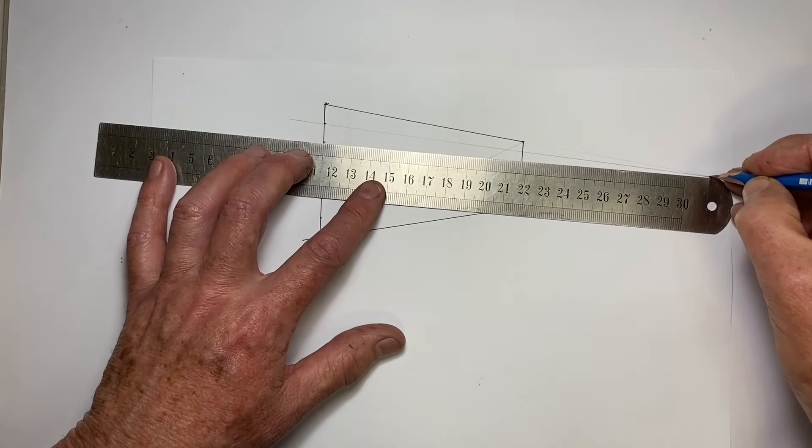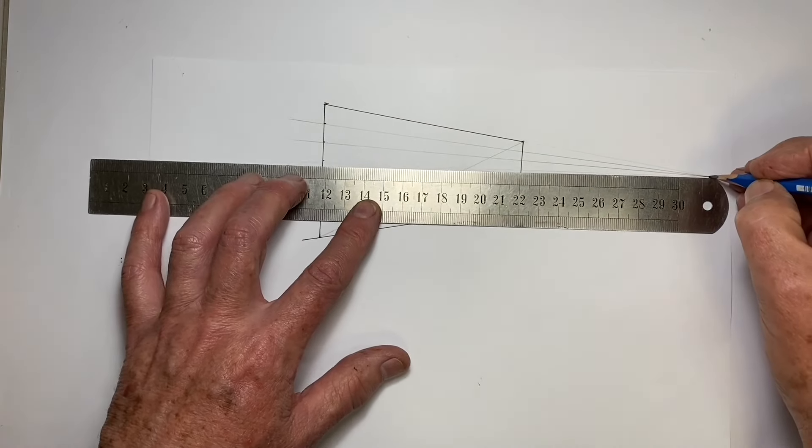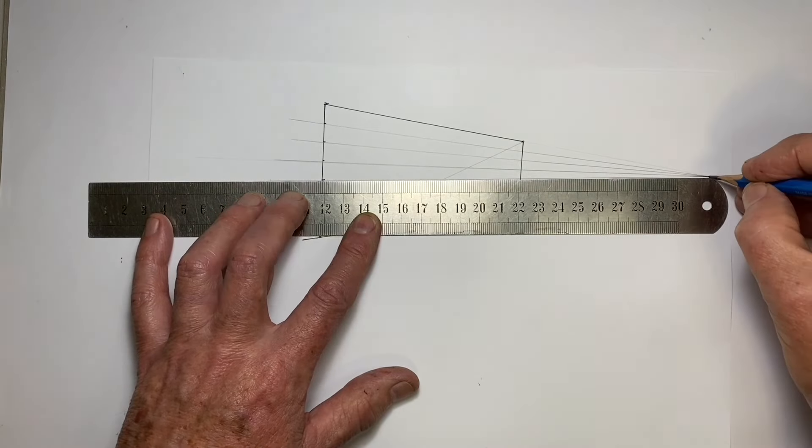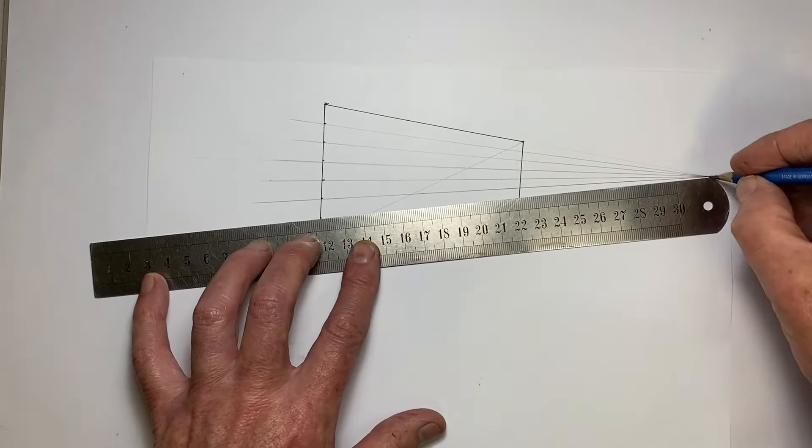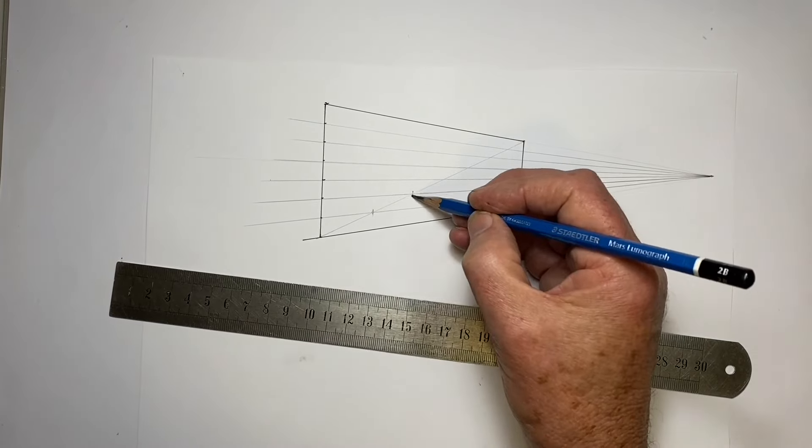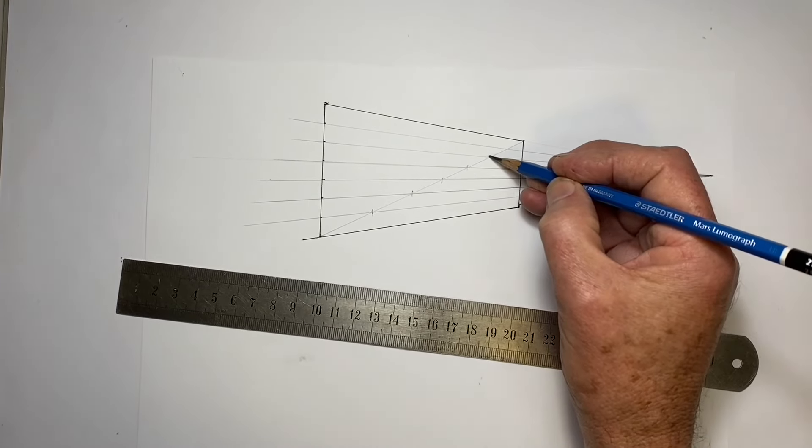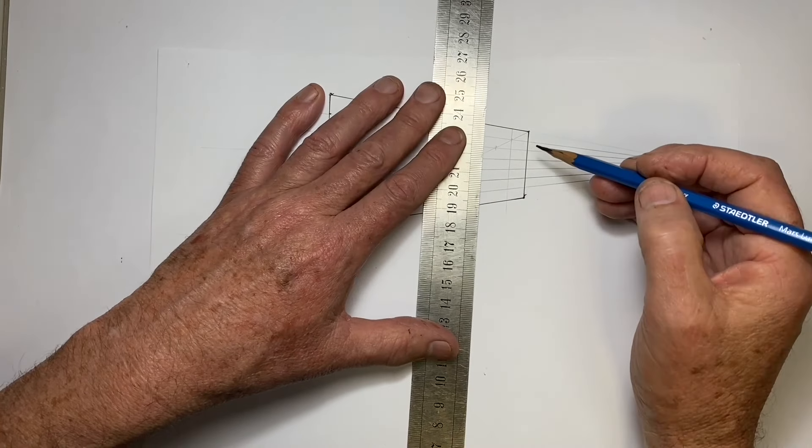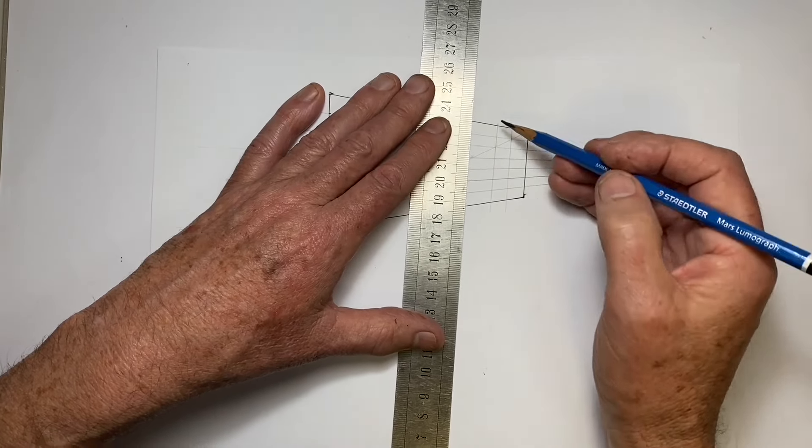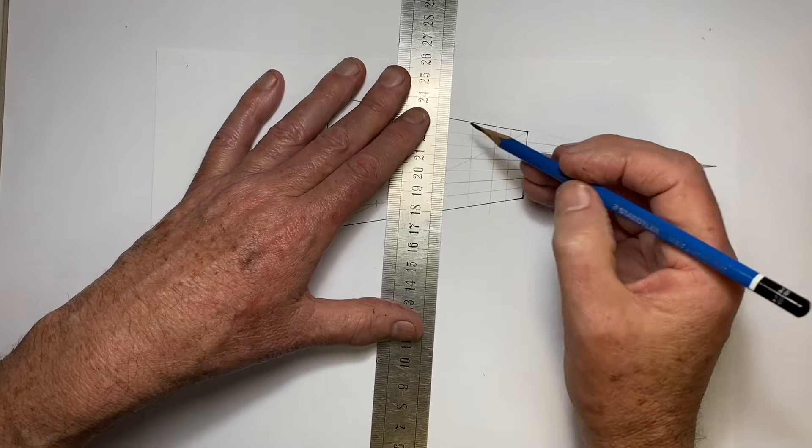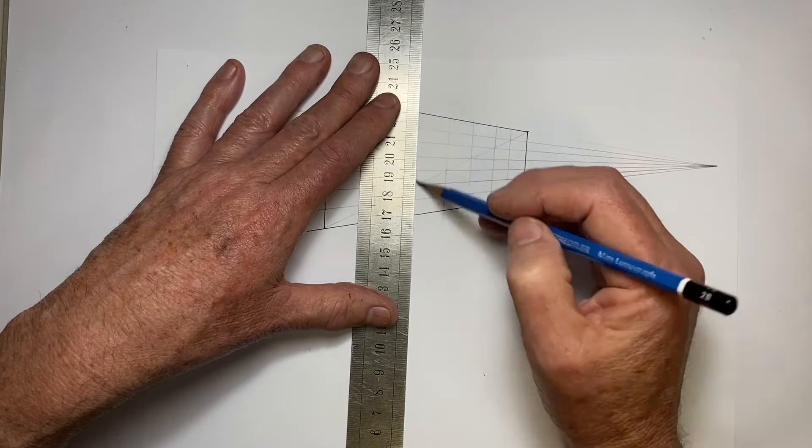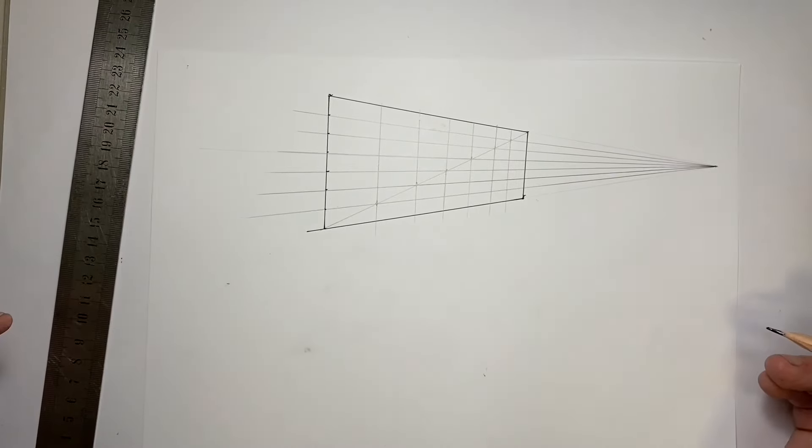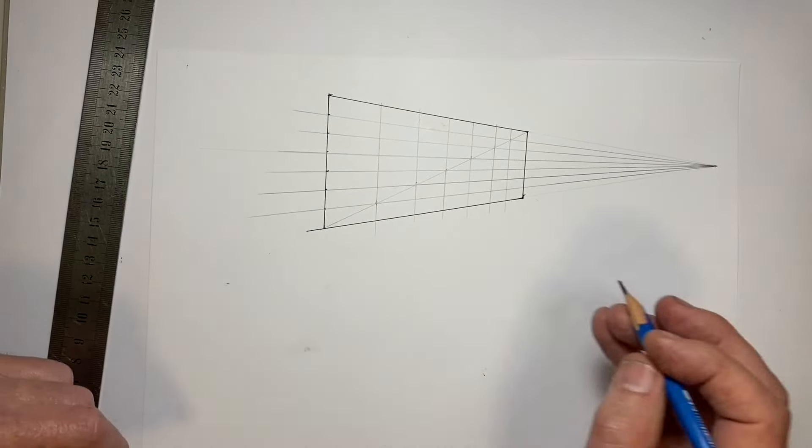And now I join each of those equal seven divisions down the height of the wall with the vanishing point. I mark where they cross the diagonal, and now I do a vertical line down them. That gives me seven equal spaces down the length of the wall that are proportioned according to the appropriate foreshortening for this wall at this angle.